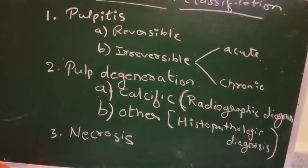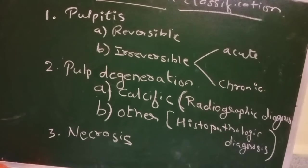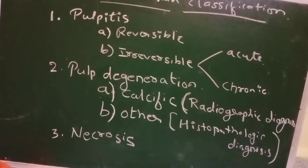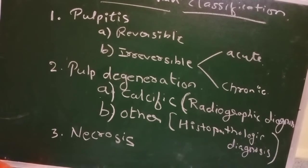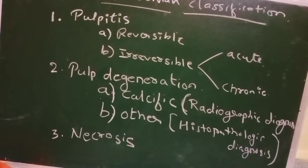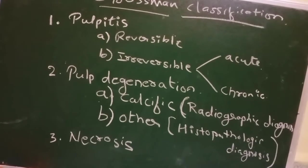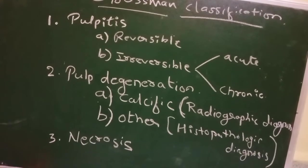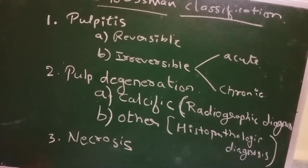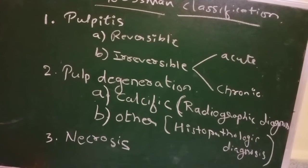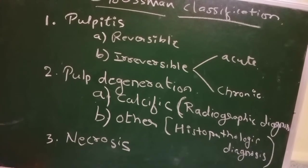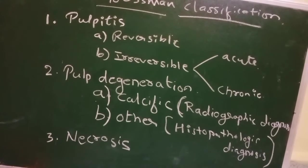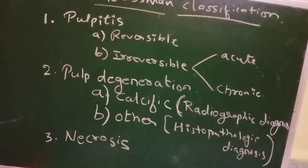Next is Pulpal Degeneration. Pulpal Degeneration involves changes within the pulp, like calcification or other histological changes. Next is Necrosis.